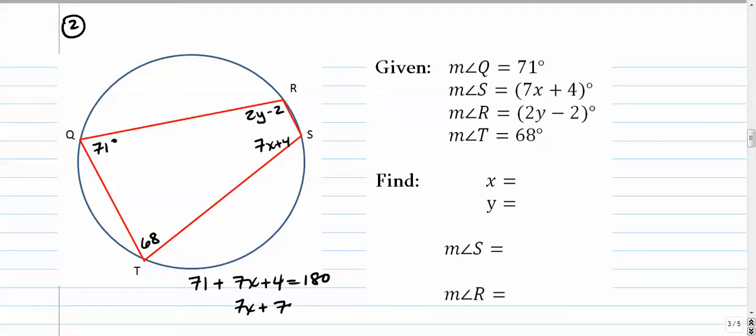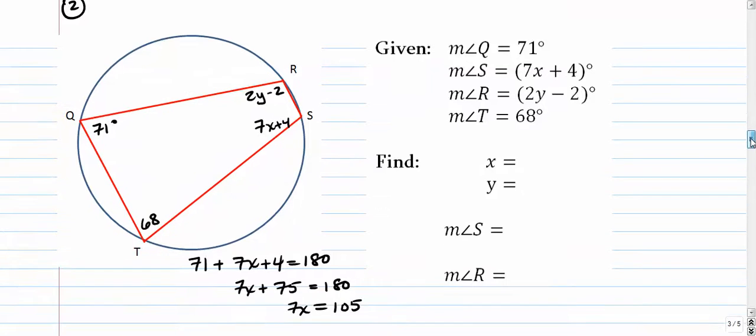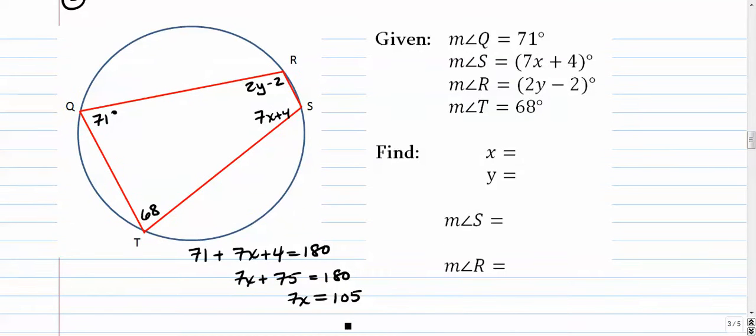7x plus 75 equals 180. 7x equals 105. And 105 divided by 7, of course, is going to be, I think, 15.